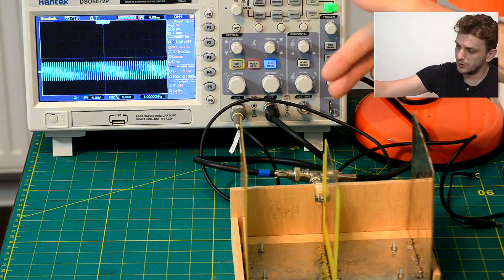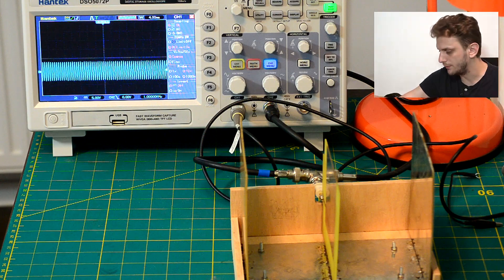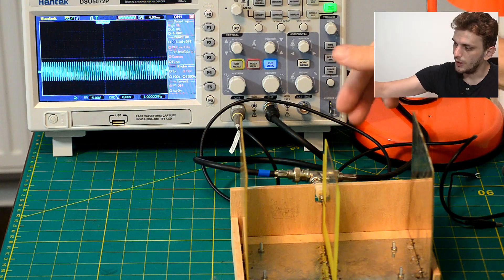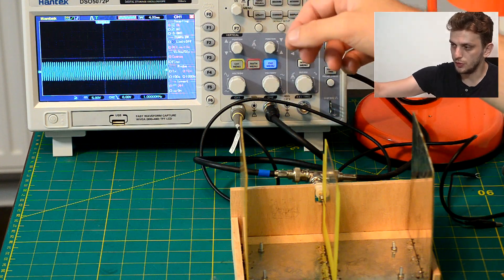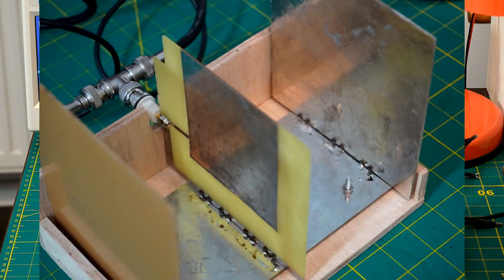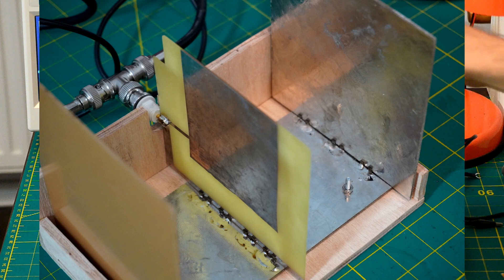Basically it's a capacitor with a BNC connector here on the back. So I have this thing plugged into the signal generator which is on the back side and then also to the second channel of the oscilloscope so we can see the signal that we're injecting.